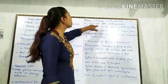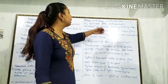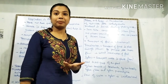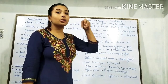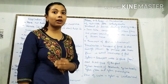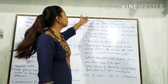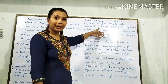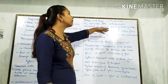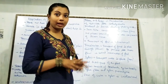Phloem helps in the translocation of nutrients — like carbohydrates which are produced in photosynthesis in the leaves — to wherever they are needed throughout the body of the plant. There are four constituents of phloem: sieve tubes, companion cells, phloem fibers, and phloem parenchyma. Phloem is a complex tissue.